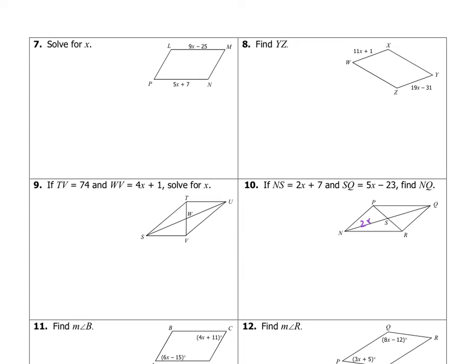So to find NQ we must find x, and we need to look for a relationship. And we know for a parallelogram that the diagonals bisect each other. So there's your setup. And if you solve it, your x is 10. Then you have to plug it back in.